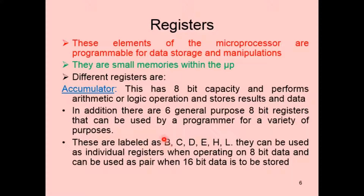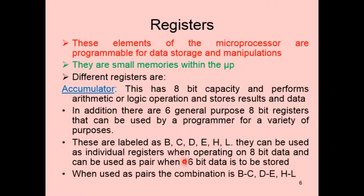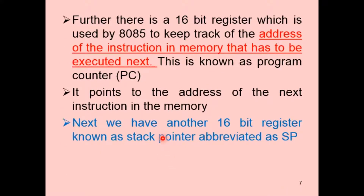If the data size is bigger than 8 bits, two registers can be combined. The allowed combinations are B and C, D and E, or H and L. It is not possible to combine, for example, B and D. These register pairs allow storage of data larger than 8 bits.